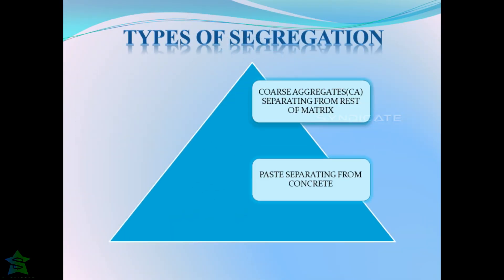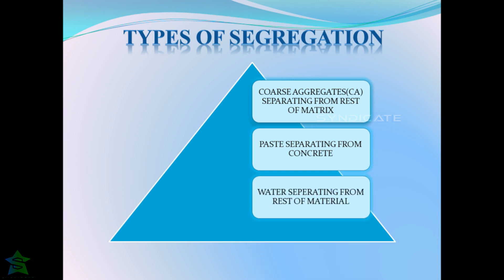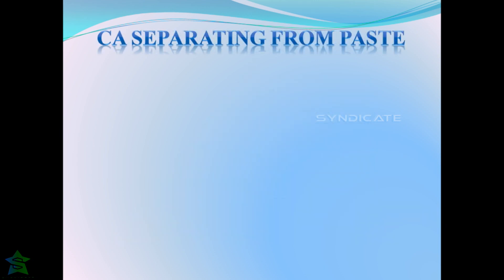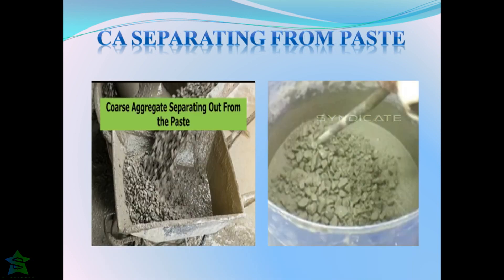Segregation may be of three types. The first type is coarse aggregates settling down from the rest of the matrix. The second type is the paste or the matrix separating away from the coarse aggregates. The last type is water getting separated out from the rest of the material, which is also known as bleeding of concrete.